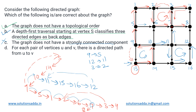For option D: 'for each pair of vertices u and v there exists a directed path from u to v.' Pick the top-left vertex as source and the bottom-right as destination — from the source you can traverse certain paths but you get stuck and cannot reach the bottom-right vertex. There is no directed path between every pair of nodes because the graph is not strongly connected. So statement D is also incorrect. The only correct answers are options A and B.